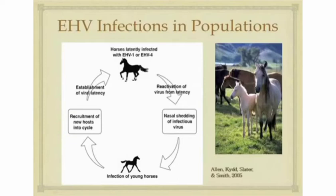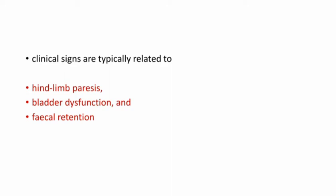Recruitment of new hosts into the cycle leads again to establishment of viral latency and infecting adult horses. Clinical signs are typically related to hind limb paresis, bladder dysfunction, and fecal retention.